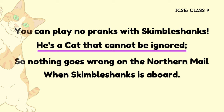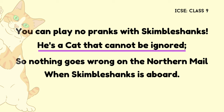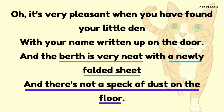You can play no pranks with Skimble Shanks. He is a cat that cannot be ignored. So nothing goes wrong on the northern mail when Skimble Shanks is aboard. Line 29, 'he is a cat that cannot be ignored,' is an example of hyperbole. This phrase uses exaggeration to emphasize Skimble Shanks' role and his importance for a smooth and trouble-free journey on the Nightmail.